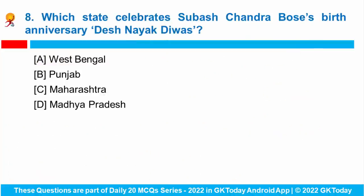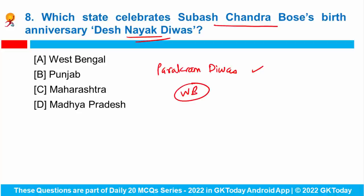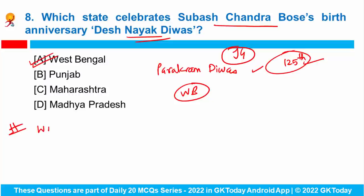Question number eight: West Bengal celebrates Subhash Chandra Bose's birth anniversary as Desh Nayak Divas, while the centre decided to celebrate it as Parakram Divas. The Prime Minister unveiled a hologram statue of Netaji Subhash Chandra Bose at India Gate until a grand statue of the freedom fighter is installed. This year marks Netaji's 125th birth anniversary. West Bengal was also in news as the World Bank approved a loan of around 1000 crore rupees for West Bengal under the West Bengal Building State Capability for Inclusive Social Protection Operation.